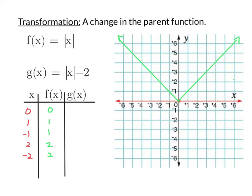But let's take a look at g of x, which is the absolute value of x minus 2. How we graph when we don't know how to graph is by plotting a bunch of points. I've got a table mostly filled in for f of x, but let's see what those same points do when we're talking about g of x.